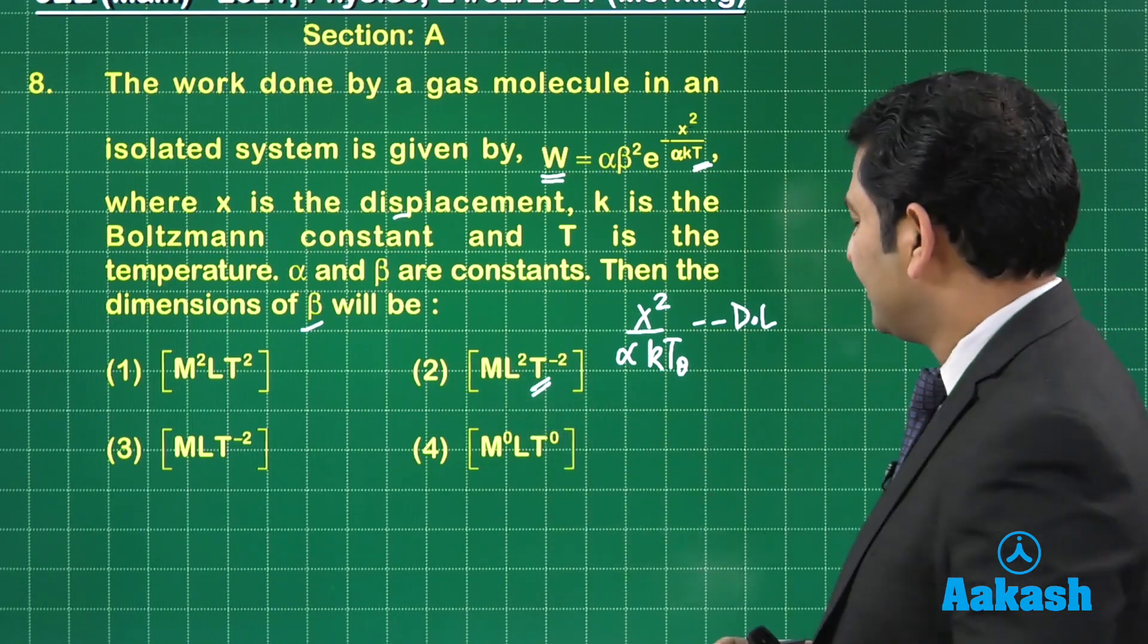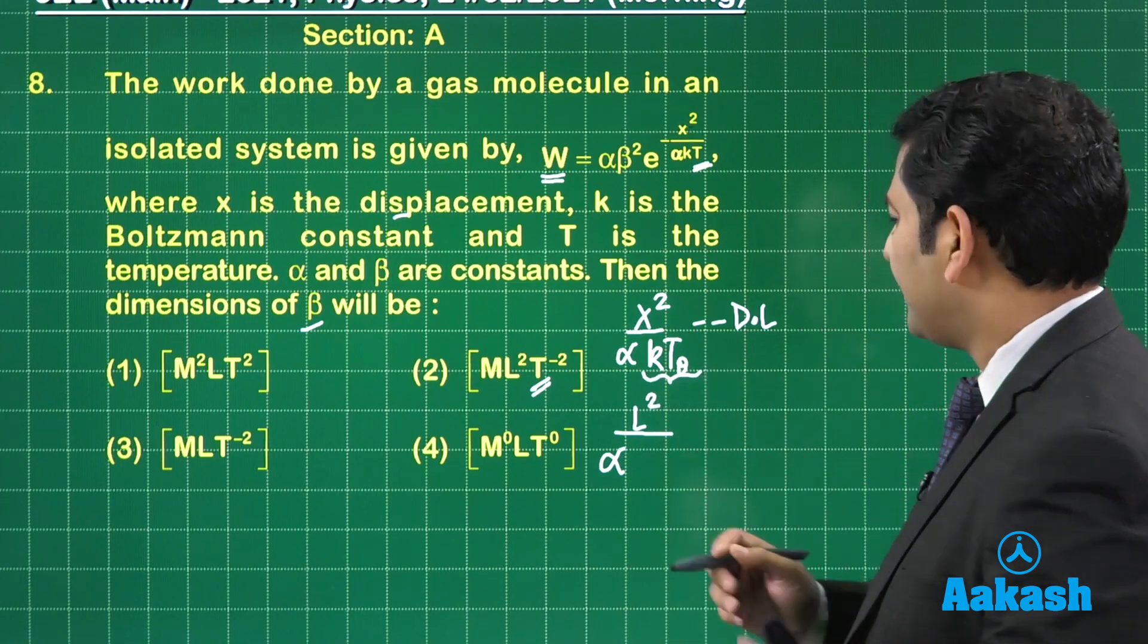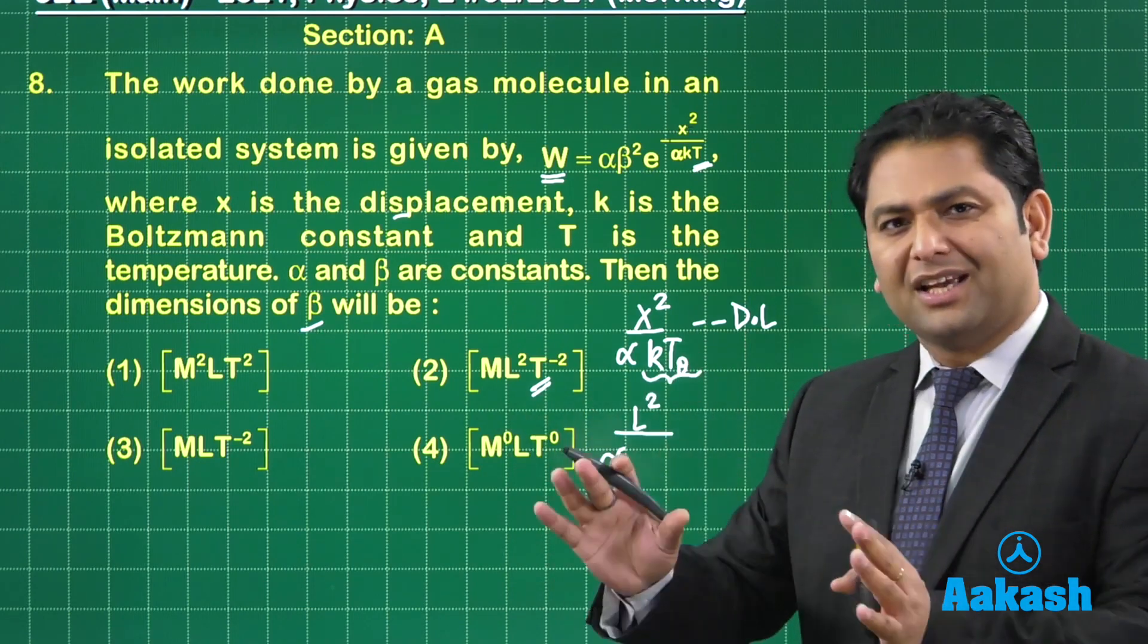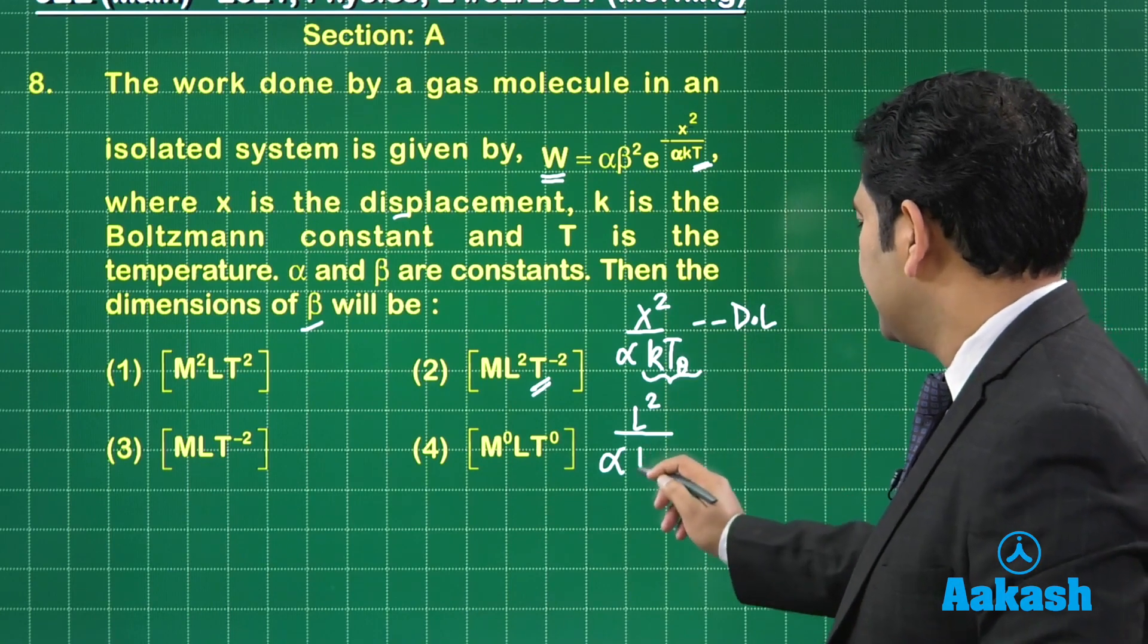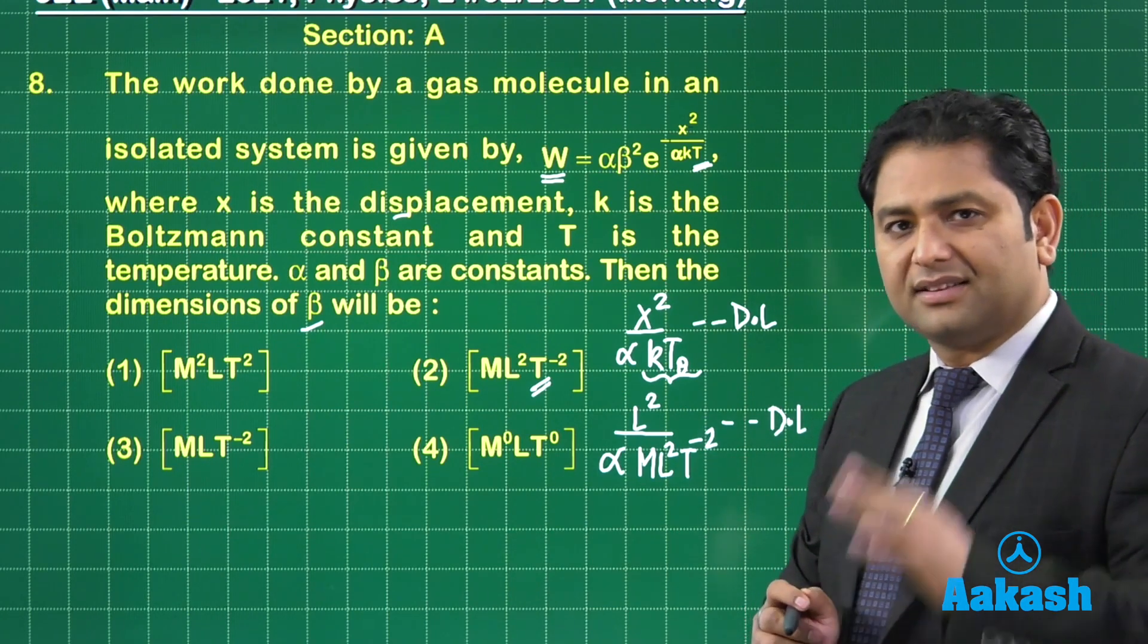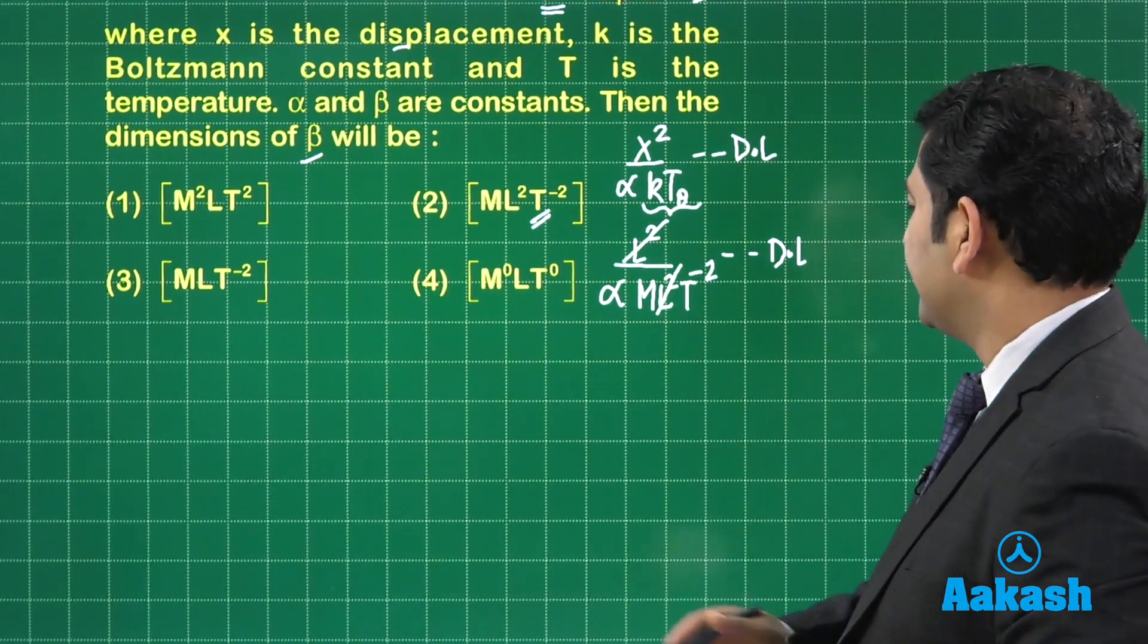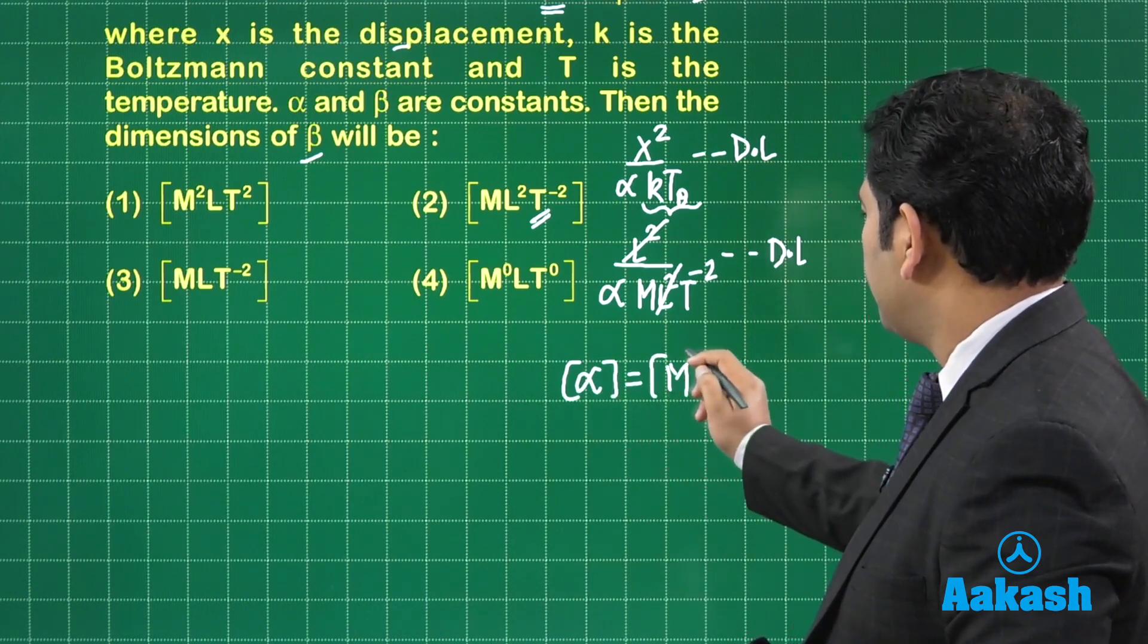X squared will be L squared, alpha is same. You don't need to find the dimensional formula for Boltzmann constant and temperature separately because 3 by 2 KT is the expression of kinetic energy. It's a very simple expression. That's the energy, ML squared T minus 2, and that comes out to be dimensionless. L squared gets cancelled. I get the dimensional formula for alpha equals M minus 1 T squared.